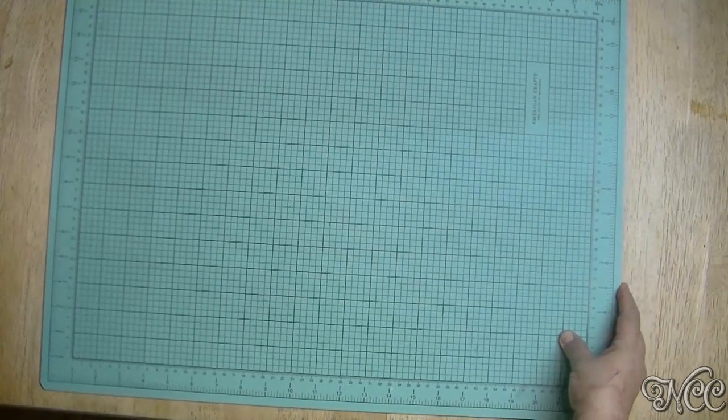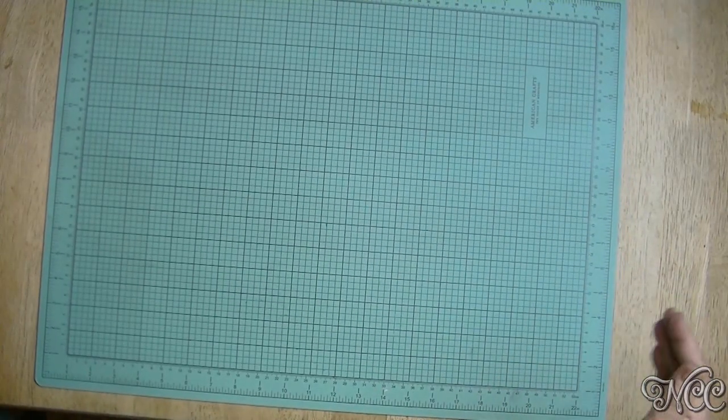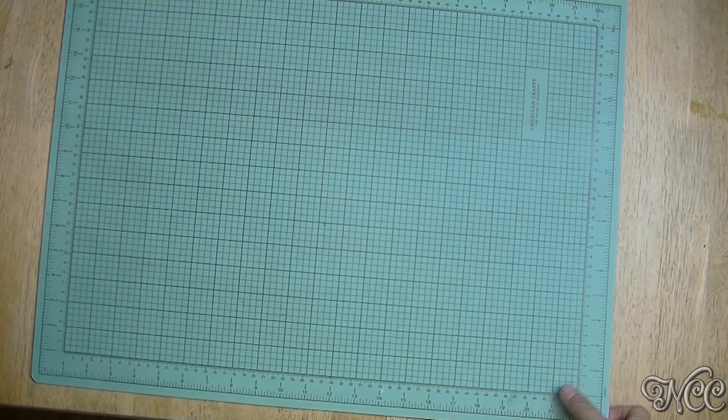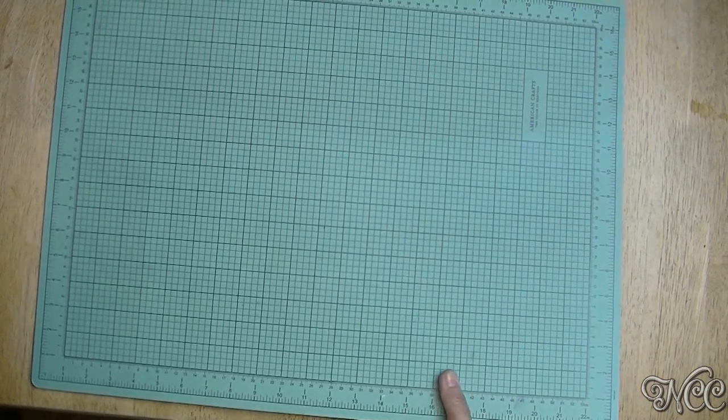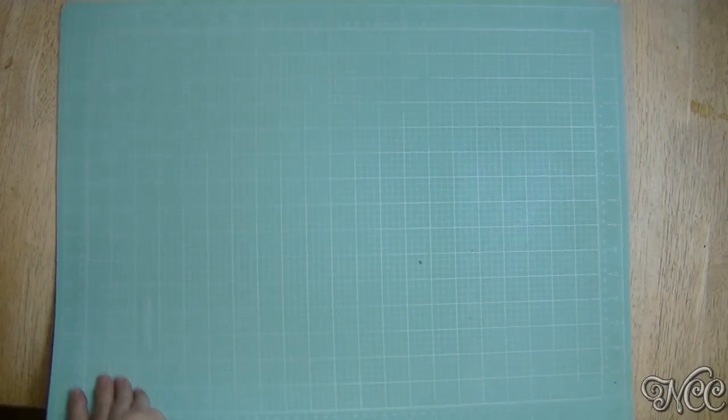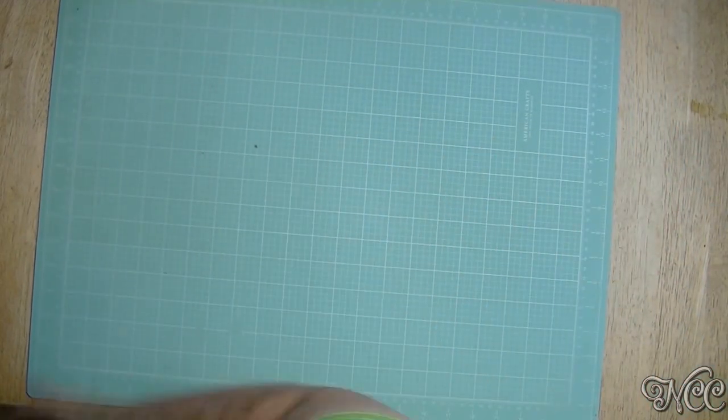It's rather large, it is 22 by 17, I believe 23 by 17, but it is also reversible so this is the black side and then this is the white side and I'll probably leave it on that one because it's better for the camera.